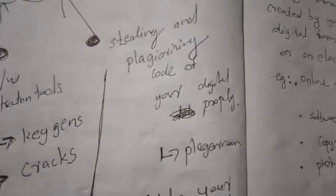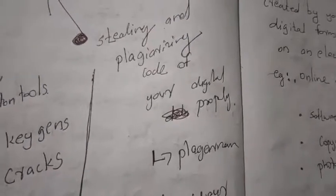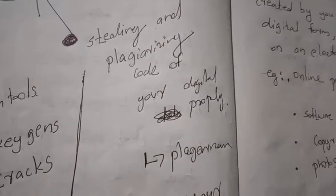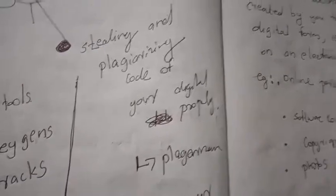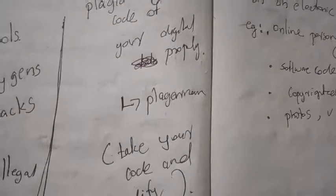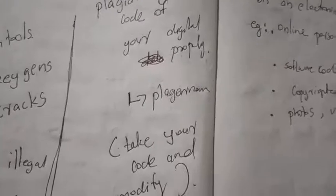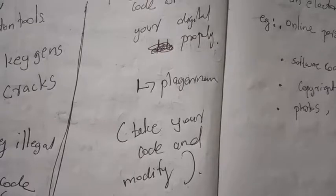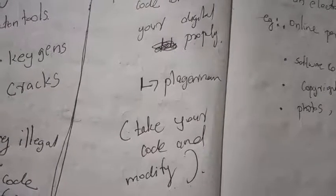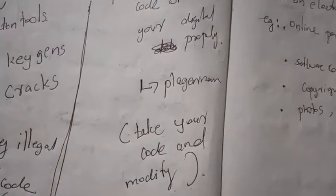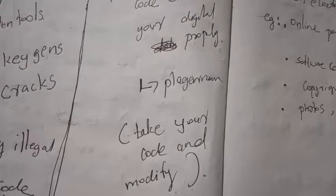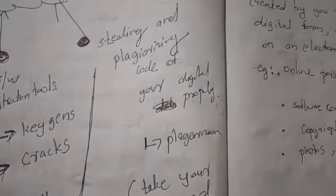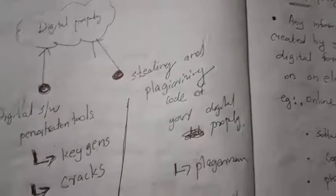The second threat is stealing and plagiarizing code of your digital property. Plagiarism means taking your information and publishing it as their own without giving you any credit. A third party or hacker can take your code, modify it, and upload it as their own code without giving any credit. Plagiarism is one of the main digital threats to digital property.